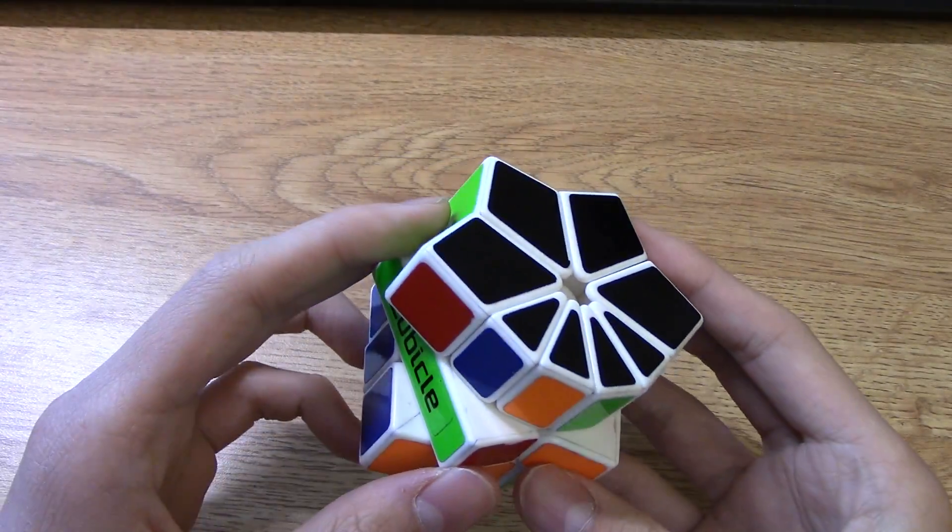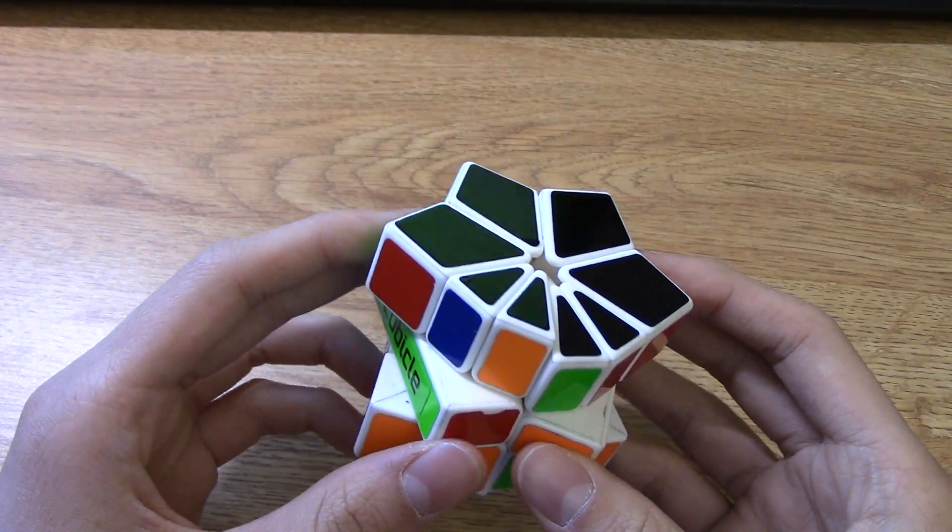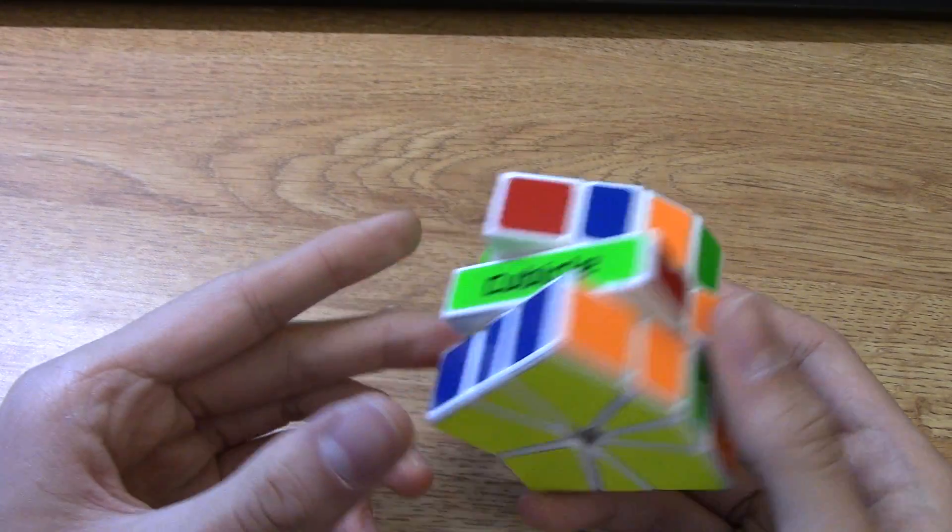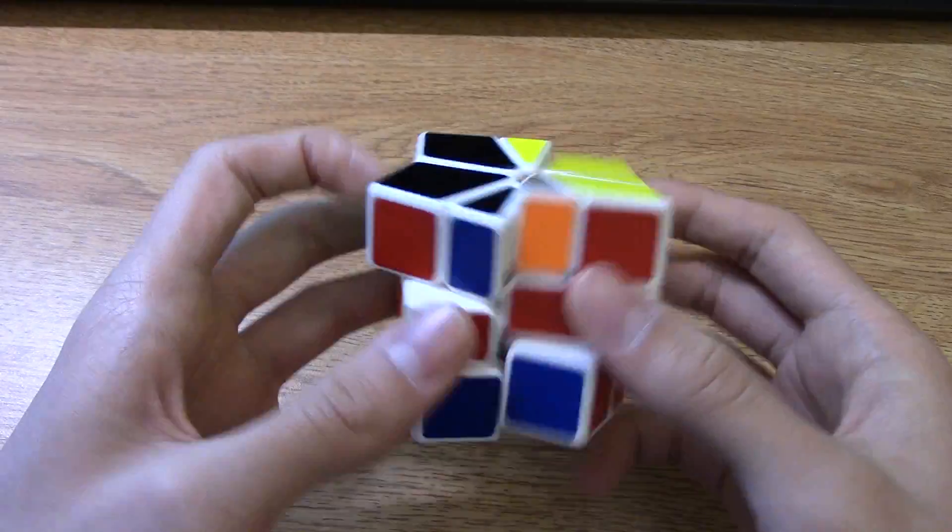Next case here is scallop kite. And for scallop kite, for the even algorithm, you're just going to do scallop kite normally as you do in the scallop kite method.